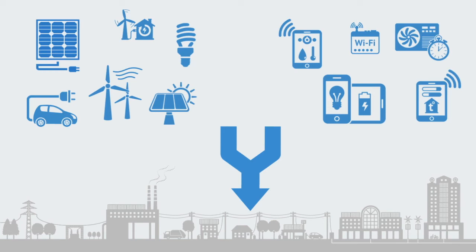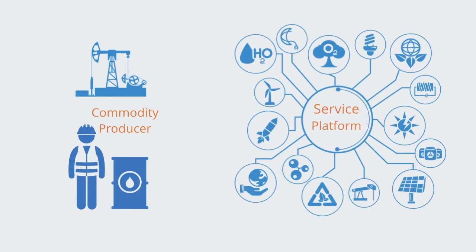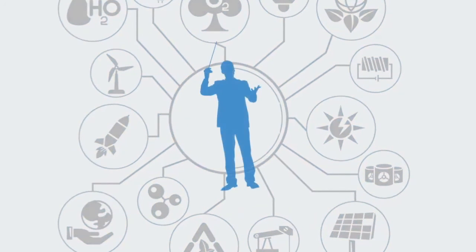In order to maintain relevance within this new context of the smart grid, incumbent energy companies will need to shift from being centralized providers of commodity energy towards a platform model where they work to manage distributed energy networks, providing the information and services for end users to manage their energy provision and demand. The leading energy companies of tomorrow will not be producers. They will be platform orchestrators.